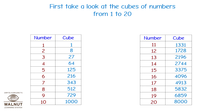1 cubed is 1, 2 cubed is 8, 3 cubed is 27, 4 cubed is 64, 5 cubed is 125, 6 cubed is 216, 7 cubed is 343, 8 cubed is 512, 9 cubed is 729, 10 cubed is 1000.